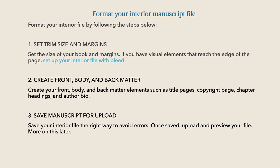Create front, body, and back matter. Create your front matter — that's dedications, welcome pages, 'in memory of,' and things like that. The body and back matter elements include title pages, copyright page, chapter headings, and the author biography. Then save your manuscript for upload — save your interior file the right way to avoid errors. Once saved, you can upload and preview your file.